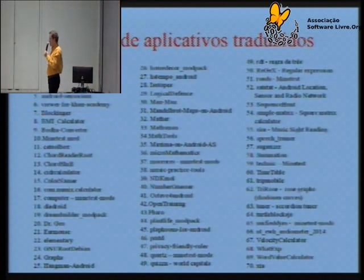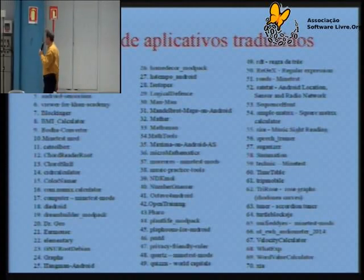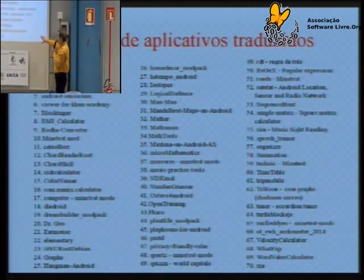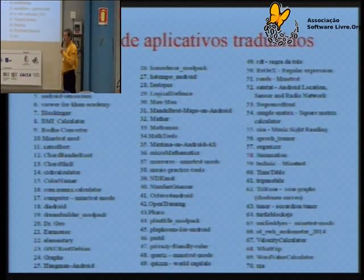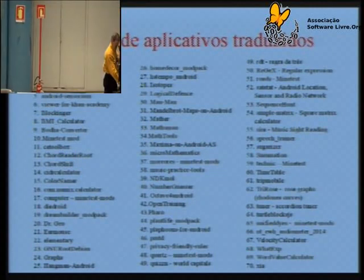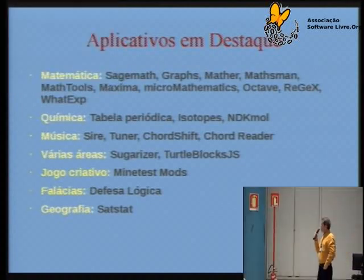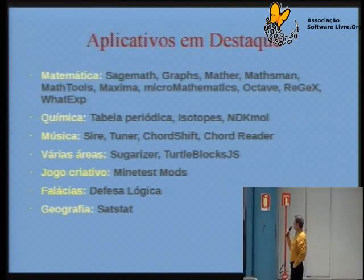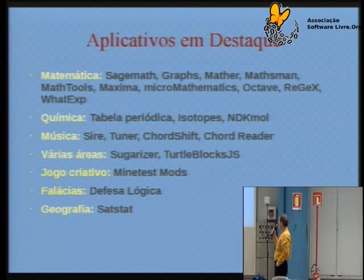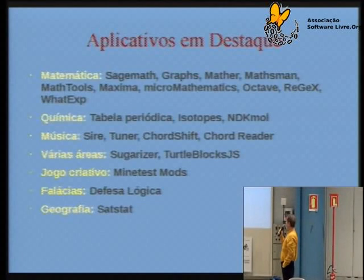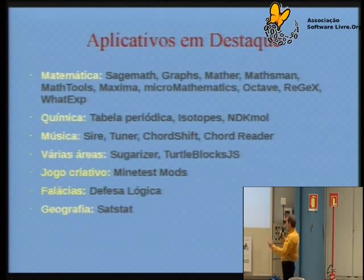Aqui tem setenta — não vamos nos deter nisso — nós traduzimos cento e três. Programas destacados de matemática, de química, de música, de várias áreas — quer dizer que eu posso trabalhar com física, com química, com geografia, diferentes áreas do conhecimento. Jogos, tem um de falácias, geografia.